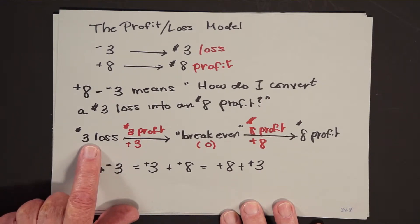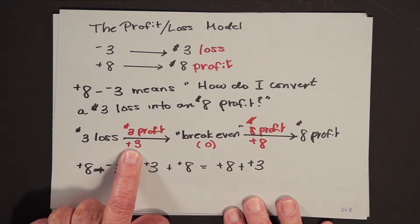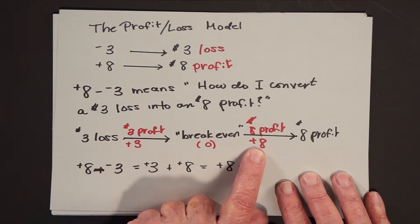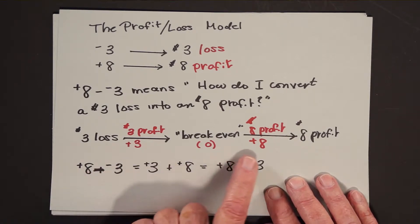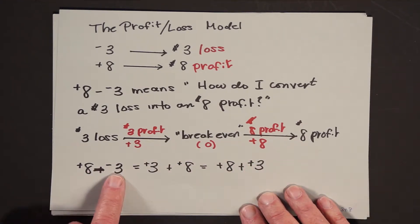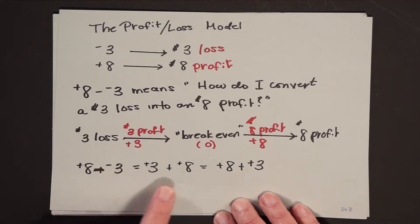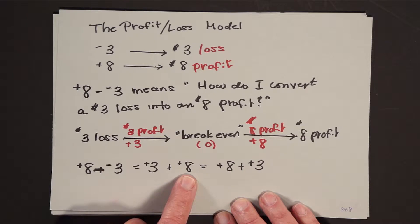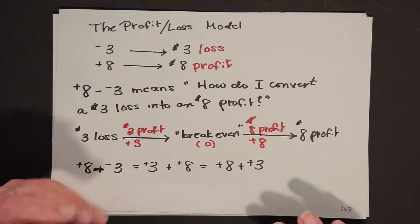To get from a $3 loss to breaking even, which we just called zero, I had to make $3. And then to get to an $8 profit, I needed eight more dollars. So altogether, I had to add on positive 3 and positive 8. In other words, positive 8 minus negative 3 was the number I got by first adding on positive 3 to negative 3 to get to zero, then adding on positive 8. So positive 3 plus positive 8, which was the same as positive 8 plus positive 3, was just an $11 profit.